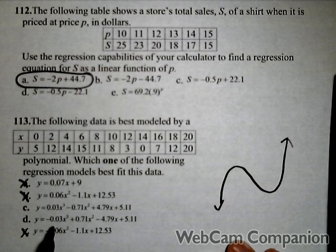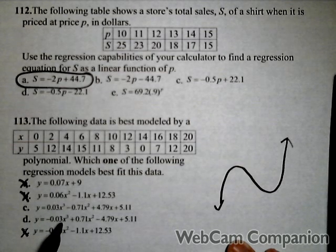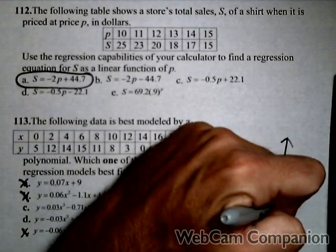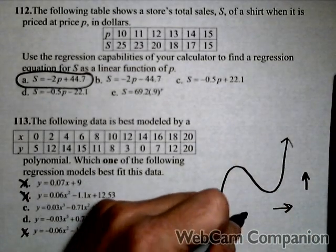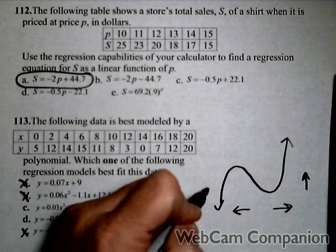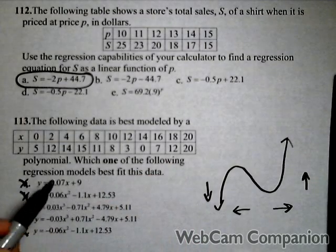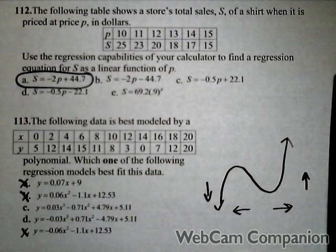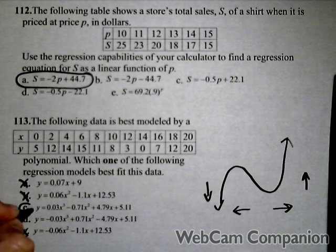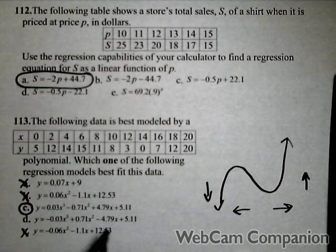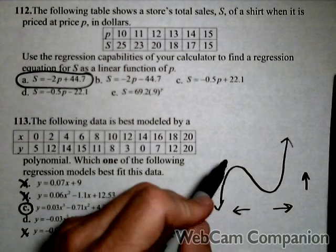So a cubic's seeming like the best possibility. Now notice these are two pretty similar ones. What I'm going to look at now is the end behavior. Notice that as X goes to positive infinity, the function goes to positive infinity, and as X goes to negative infinity, the function goes to negative infinity. That tells me I want a positive lead coefficient. So it has to be C, is the model that best represents this data.